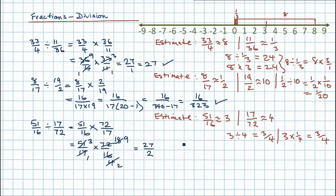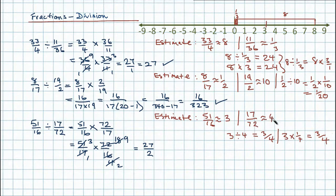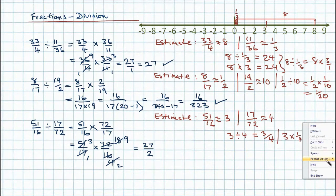Now there seems to be some sort of mistake here. I want to check why I've got a disparity between the answer I got and the answer I was expecting from my estimate. Let's go back and check. I've got 51 divided by 16 approximates to 3, and 17 divided by 72 approximates to... wait. 17 is much smaller than 72, so this isn't an improper fraction. I shouldn't have had a whole number here because my number should have been less than 1. In fact, what I've done is inverted it right from the start.